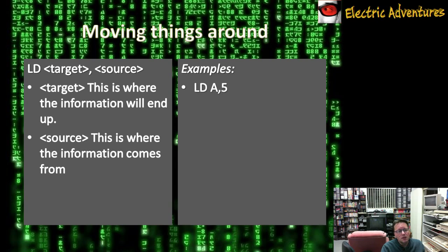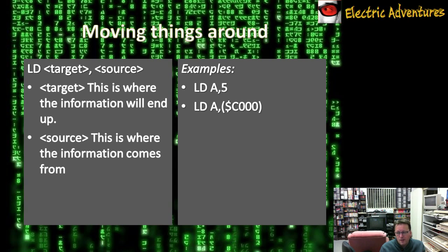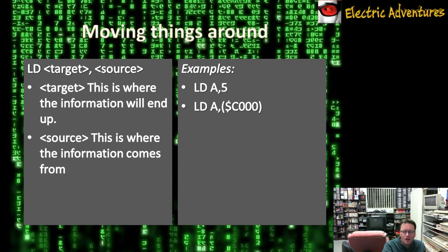Some examples. A straight load: LD A, 5. What that does is take the actual number 5 and put it into A, the accumulator, so afterwards the accumulator would contain 5. That's called a direct statement. The next one: LD A with brackets — the brackets signify an address in memory. With the dollar sign in front of it, that means hexadecimal. So that's going to the address $C000, which is the start of the top 16K of our memory space, where RAM will usually be in most of the computer systems.